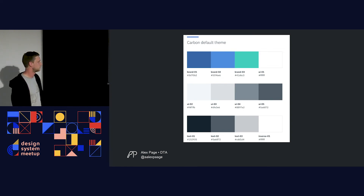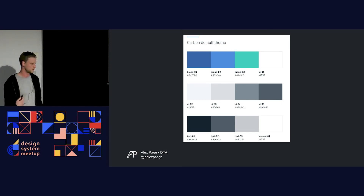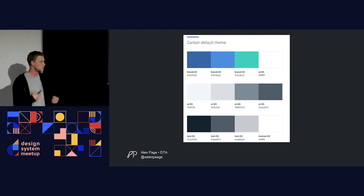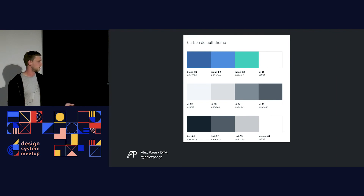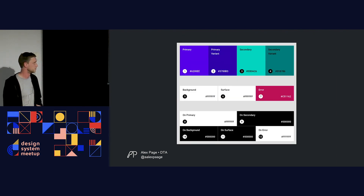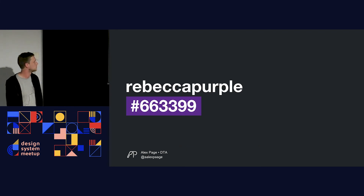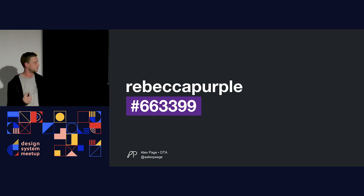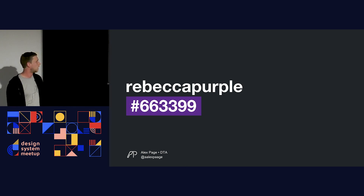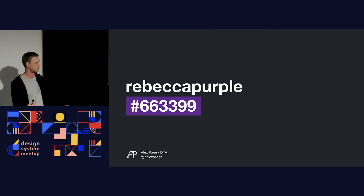This isn't new — lots of other design systems use similar functional patterns. IBM uses brand colors, which you'd expect in headers, footers, and logos, along with user interface colors and text colors. Material Design has primary, secondary, background, surface, and error colors. But colors can also be more significant — the color Rebecca Purple is actually a memorial for a child's passing. Her name was Rebecca, the daughter of Eric Meyer, a prominent figure in the web industry. The point is we don't need to be too serious and can actually influence our culture by naming things.